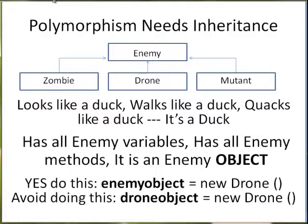Just like I'm doing with drone here. You want to avoid assigning a drone object to a variable of type drone. If I program a level of the game with five enemy characters, I do not want to have to worry about how many zombies I have, how many drones I have. I will just have five generic enemy object variables, and they can be any combination of the type.